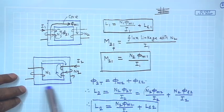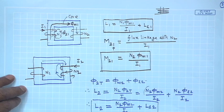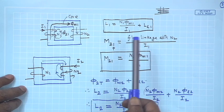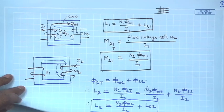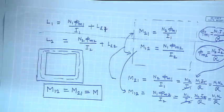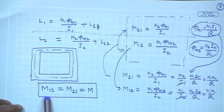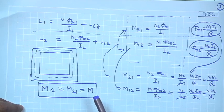Let us continue with the self and mutual inductances of coupled coils. We have taken a simple coupled coil system — two coils linked with a common magnetic circuit, core N1 and N2. Last time we found out L1, M21, M12, and eventually established that M12 and M21 are the same, equal to capital M.